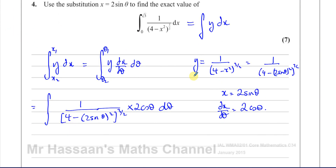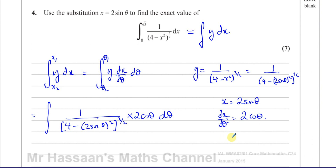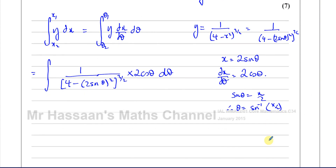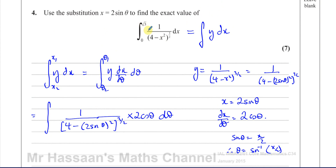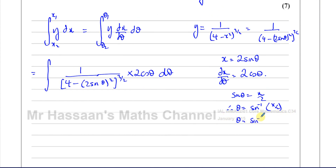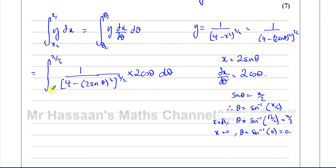Now I need to write the limits in terms of θ. Since x = 2sinθ, sinθ = x/2, so θ = arcsin(x/2). We must use radians because calculus with trig functions always requires radians. When x = √3: θ = arcsin(√3/2) = 60° = π/3. When x = 0: θ = arcsin(0) = 0. So the new limits are 0 and π/3.